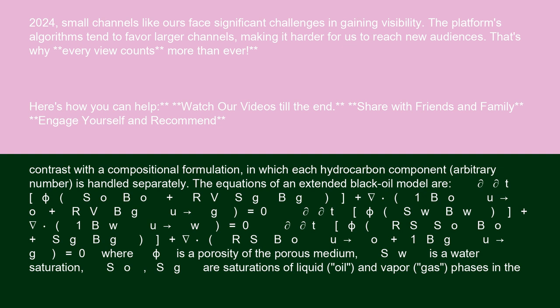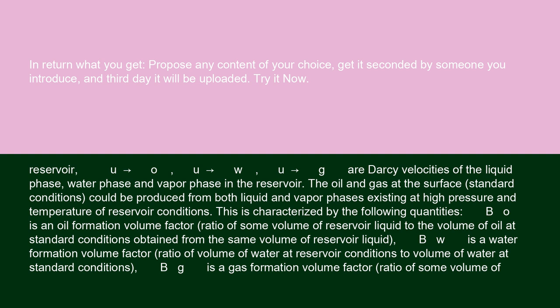Sw is water saturation. So and Sg are saturations of liquid oil and vapor gas phases in the reservoir. Uo, Uw, and Ug are Darcy velocities of the liquid phase, water phase, and vapor phase in the reservoir.